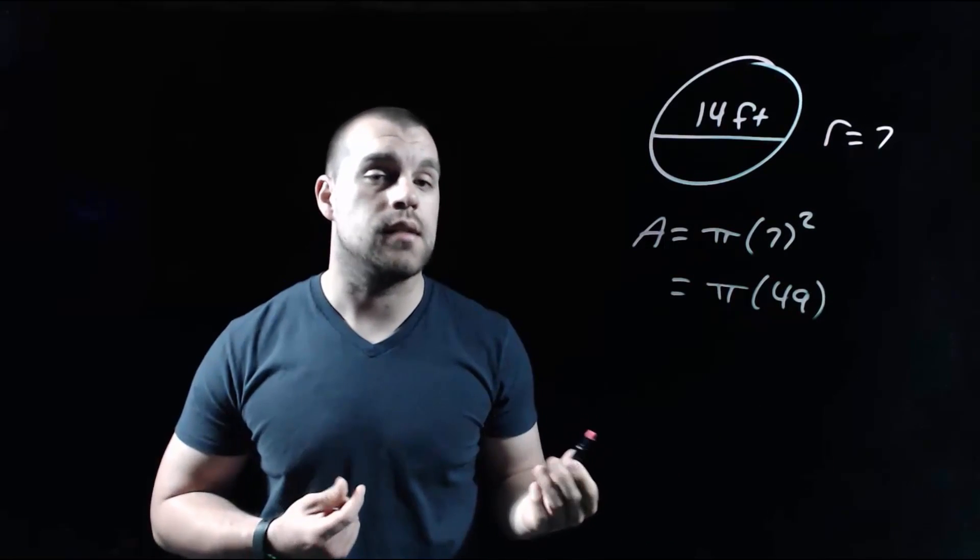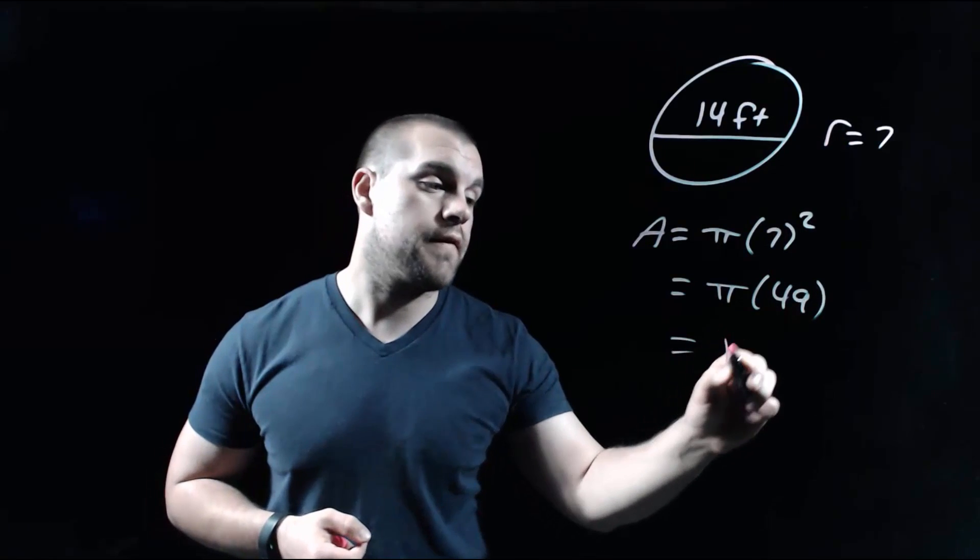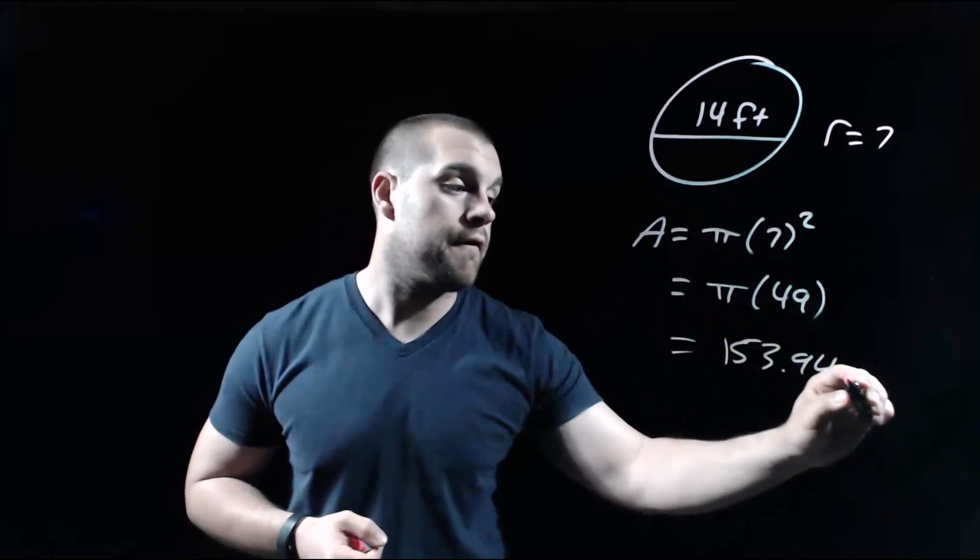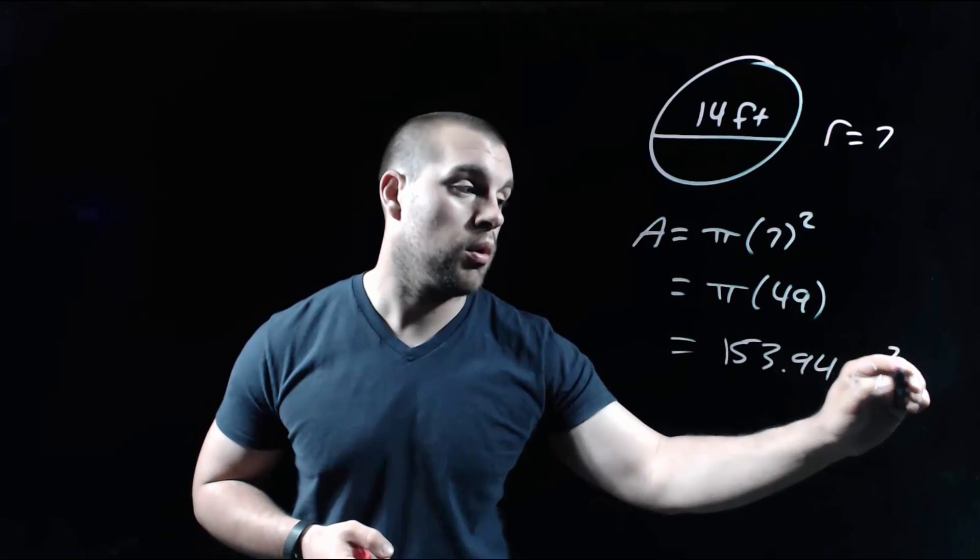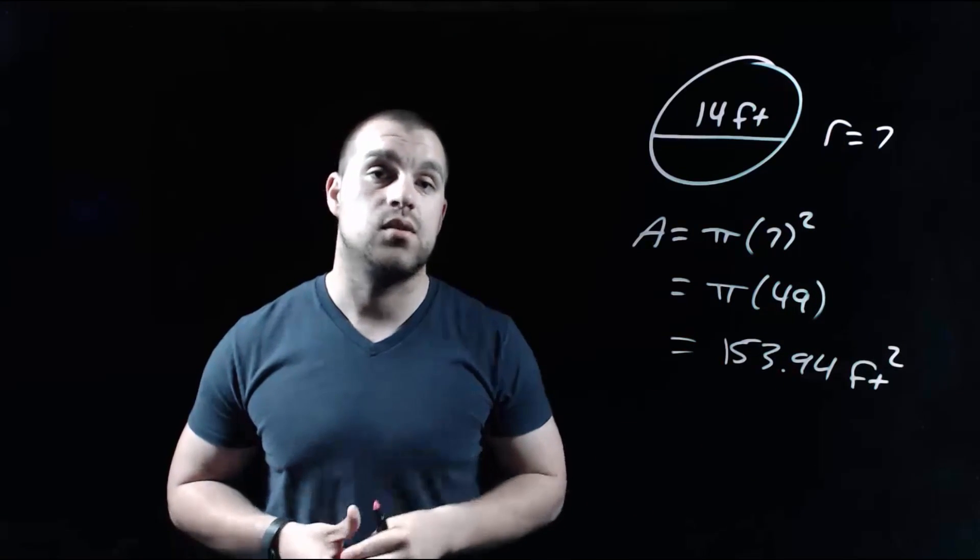Again, there's our exact answer, but if we had to type that into our calculator to get a decimal approximation, we'd get about 153.94. And we're going to throw our feet label on the end, but we're going to put a squared on it because this is an area problem. So 153.94 feet squared.